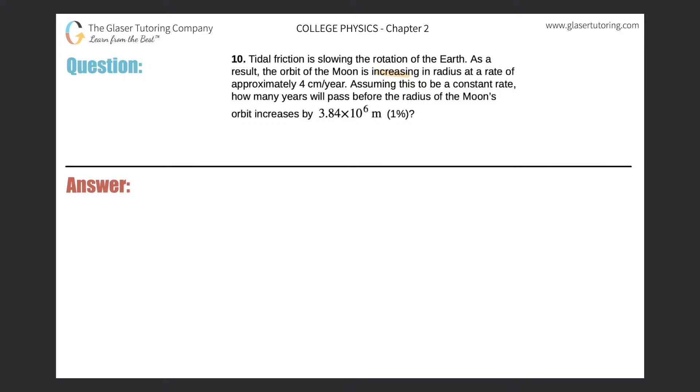Number 10. Tidal friction is slowing the rotation of the Earth. As a result, the orbit of the Moon is increasing in radius at a rate of approximately 4 centimeters per year. Assuming this to be a constant rate, how many years will pass before the radius of the Moon's orbit increases by 3.84 times 10 to the 6 meters.